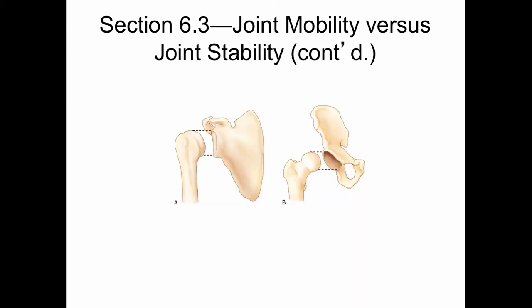The figure on the left shows the shallow socket of the shoulder joint, and the figure on the right shows the deep socket of the hip joint. As a result, the shoulder joint allows greater mobility while the hip has greater stability. The shoulder joint is less stable, and the hip joint is less mobile.